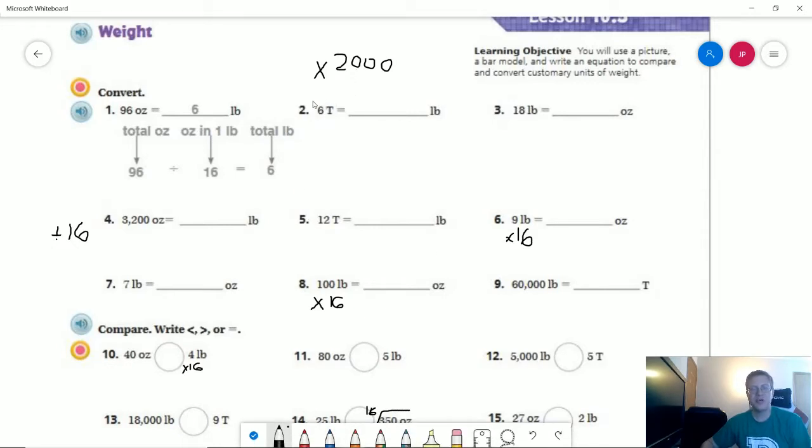To start with, we are going to work with a few problems doing conversions. A ton is worth 2,000 pounds, so I can multiply, and that's going to give me 12,000 pounds for my first one.